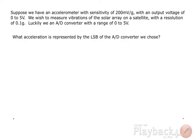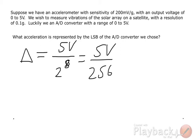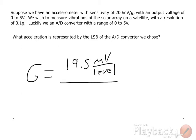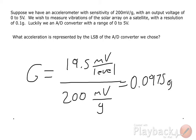What acceleration is represented by the least significant bit of the A/D converter we chose? The actual voltage resolution is our voltage range divided by 2 to the number of bits, which is 8. That equals 19.5 millivolts. The actual acceleration resolution is our actual voltage resolution divided by our sensitivity. That equals 0.0975 g's per level.